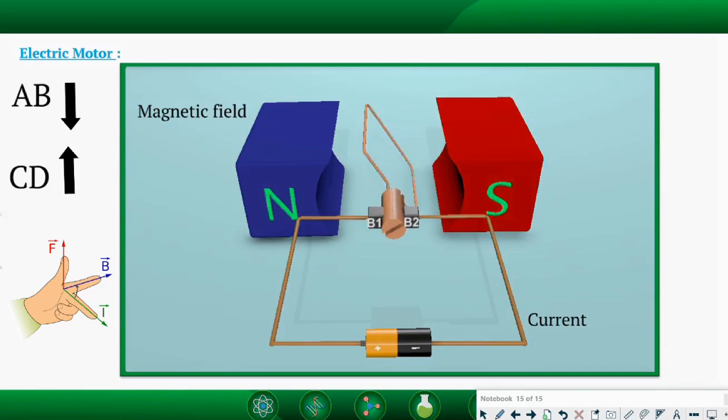Overall, because the commutator changes the direction of current in the coil, the coil continues to move clockwise. The axle connected to the coil keeps rotating in the same direction, producing mechanical movement.